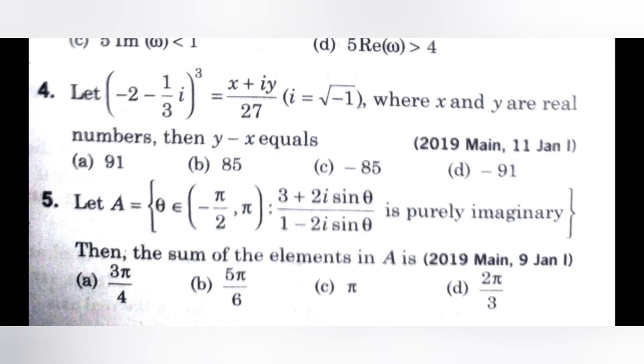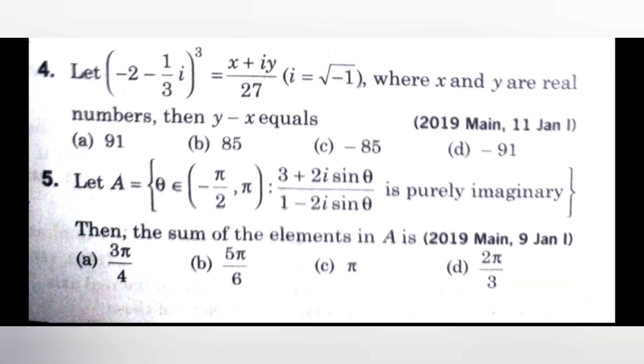Next, fifth question. Let A equals theta belongs to minus pi by 2 comma pi such that 3 plus 2i sine theta by 1 minus 2i sine theta is purely imaginary. Then the sum of the elements in A is. Check the options.